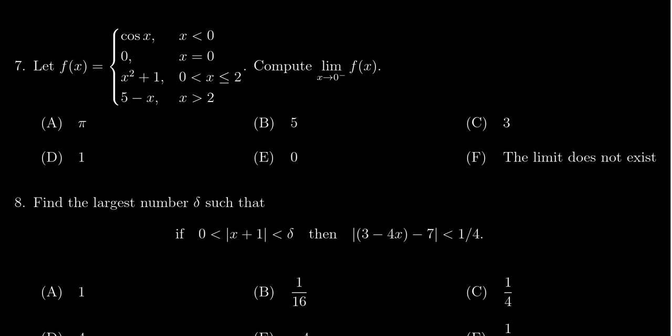We're given a piecewise function f of x, which when x is less than 0, it'll behave like cosine of x. When x is exactly 0, it'll just be 0 itself. When x is between 0 and 2, where we actually do include 2 in this interval, it'll behave like the parabola x squared plus 1.